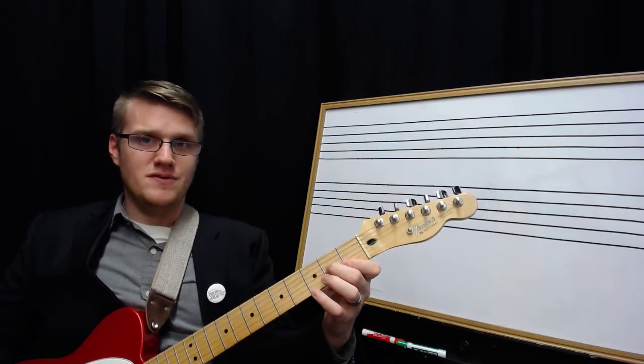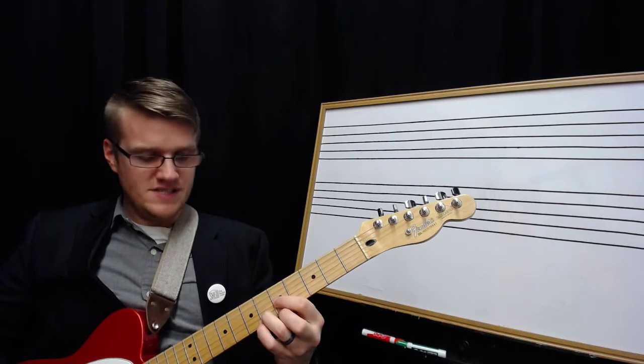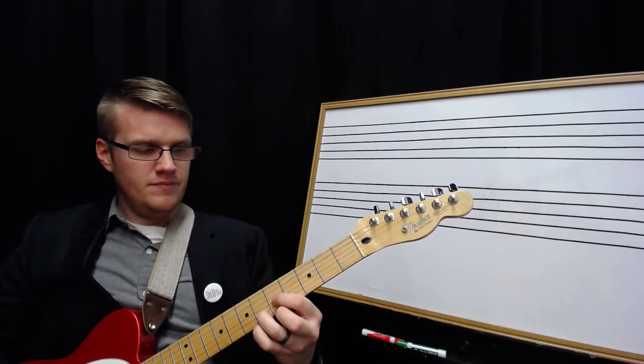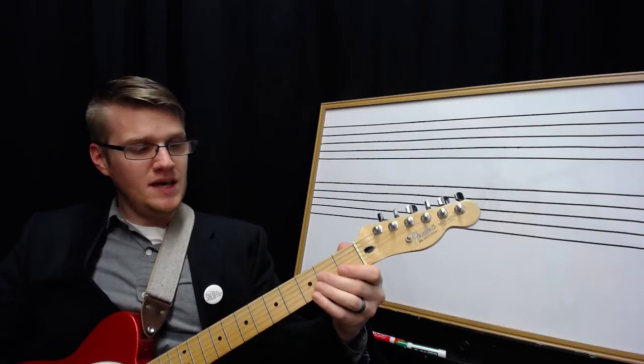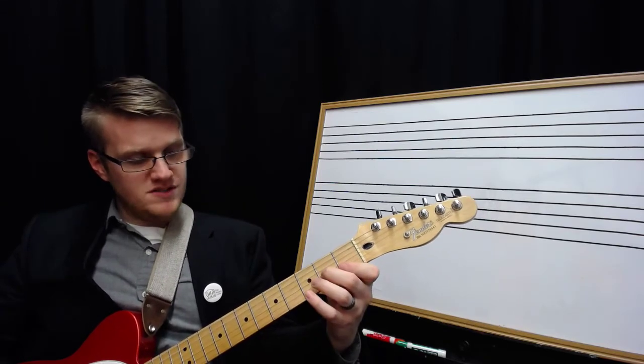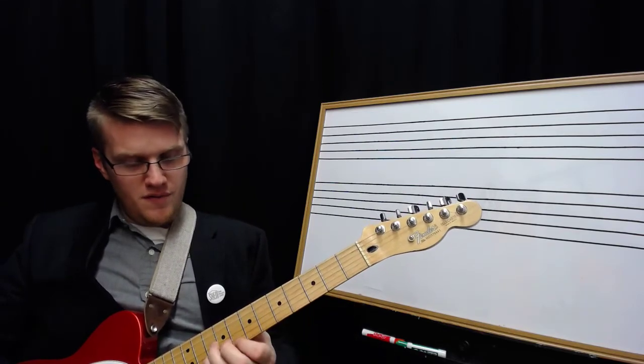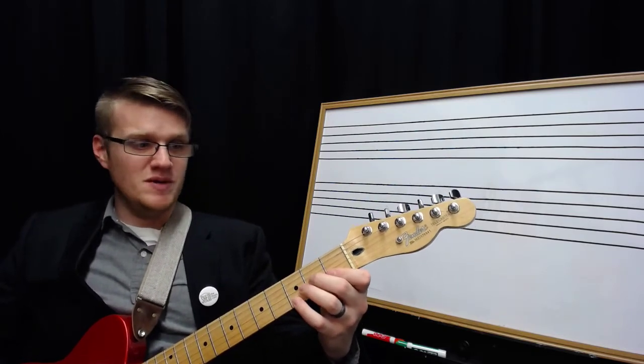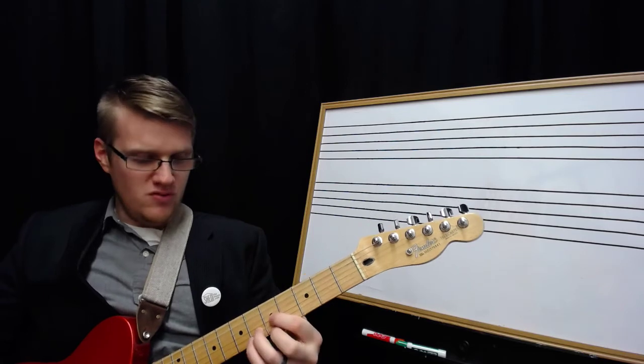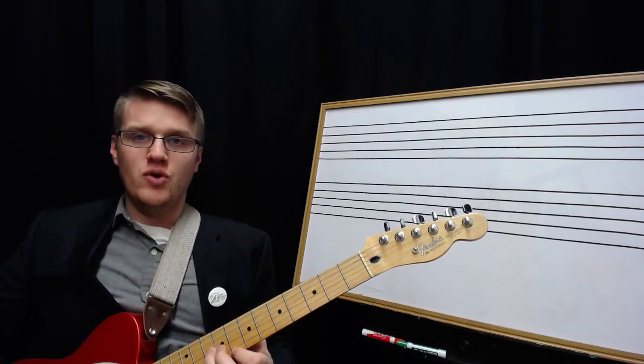So I'm going to play F in first inversion. Then F in second. Now I'm thinking about what inversion I'm on. I'm also thinking about what note is on top, whether it's the root, the third, or the fifth. And then I'm picturing where the root is on the instrument. So I have the root on top here, I have the root in the middle here, and then I have the root on the bottom there.